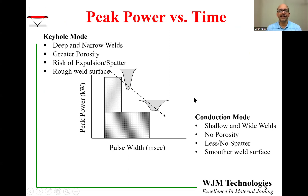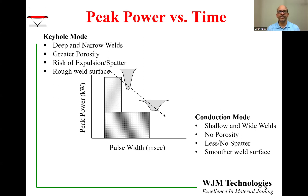A lot of laser welding, especially at the small scale where devices are tiny such as in medical devices, sensors, relays, and similar applications, is done in pulsed mode. That means the laser is on for a very short time, does the welding, and turns off. These pulses can be very small, on the order of a few milliseconds.